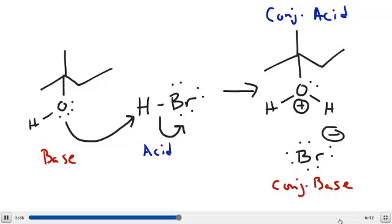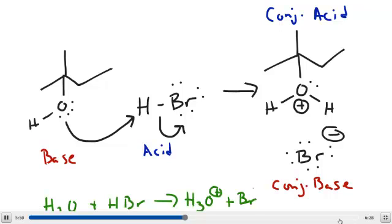A corresponding reaction from GenChem might be water reacting with HBr to give the hydronium ion and bromide ion. This is one you should have learned, but you always solvate HBr in water, and this is what you actually would have. It's a very similar reaction. The only difference here is it's an alcohol instead of water.